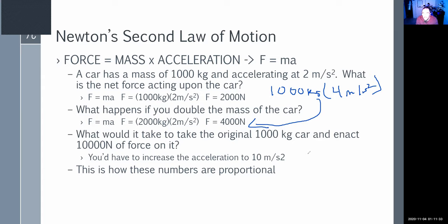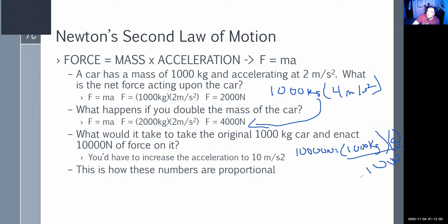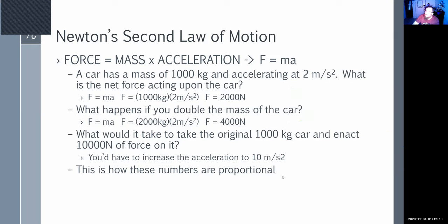What would it take to get the original 1,000-kilogram car moving with 10,000 Newtons of force? We know the force is 10,000 Newtons and the mass is 1,000 kilograms — we're looking for acceleration. Divide both sides by 1,000, and that gives us an acceleration of 10 meters per second squared. To increase the force on an object, you've got to modify the mass or modify the speed.